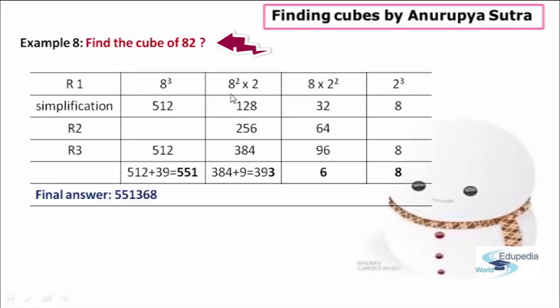Now moving to the second part — what I have done here is I have multiplied the square of the digit in the tens place with the digit in the ones place. So in our example 82, we have 8 in the tens place and 2 in the ones place. Therefore, 8² × 2 = 64 × 2 = 128, and that answer I have written in the next row called simplification.